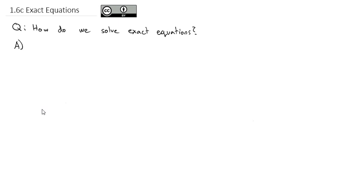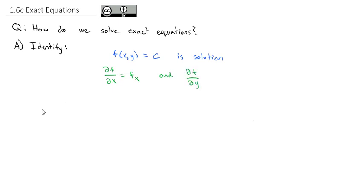As with any other type of differential equation, we're going to first seek to identify that it is exact, and we're going to set up this identification a little bit backwards. Let's say we know the solution is some function f of x and y equal to a constant. The partial of f with respect to x can be written as f sub x, and the partial of f with respect to y can be written f sub y. It turns out that sometimes the differential equation can be written in the form of f sub x times dx plus f sub y times dy equals 0.